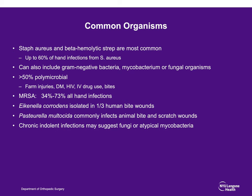MRSA is becoming much more prevalent, particularly in hand infections. Certain organisms are common for certain kinds of wounds, such as Eikenella in human bites and Pasteurella in animal bites, particularly cats and dogs. However, Staph aureus and beta-hemolytic strep do remain most common. You also need to consider chronic infections, which often can be caused by fungus or atypical mycobacteria.